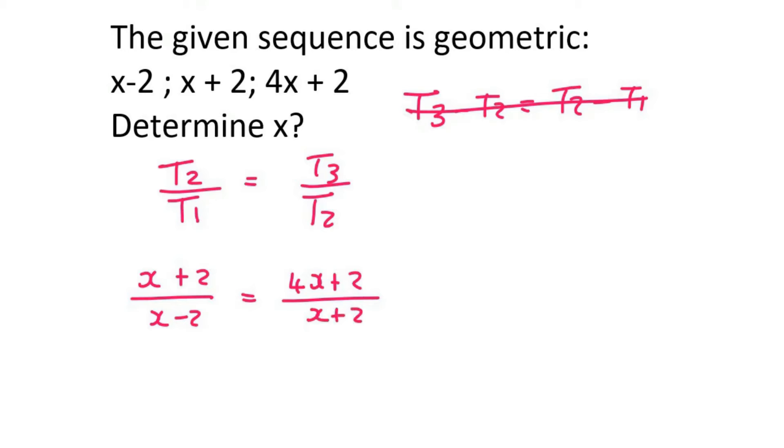Now we cross multiply. On the left we have (x plus 2)(x plus 2). On the right we have (4x plus 2)(x minus 2).